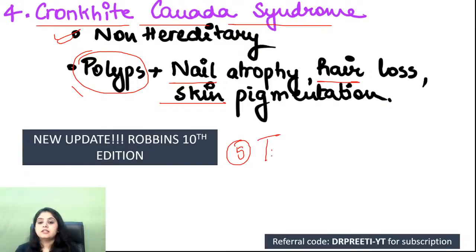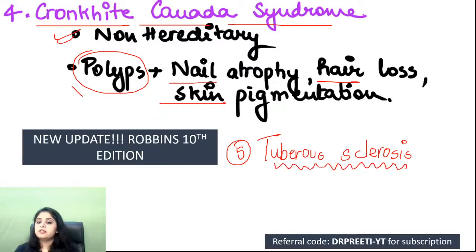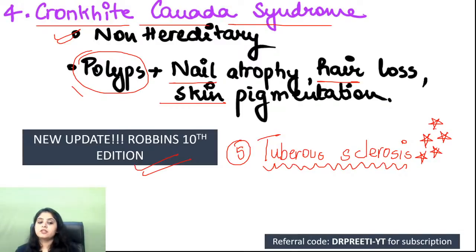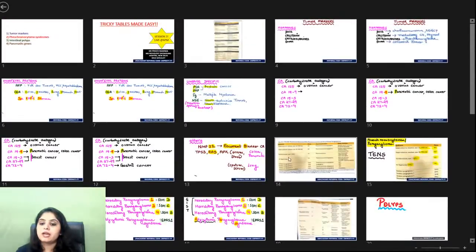A fifth hamartomatous polyp condition: tuberous sclerosis. This was present in the 9th edition but the 10th edition elaborates that hamartomatous polyps can be seen in tuberous sclerosis. This is a high-yield update expected in upcoming exams.